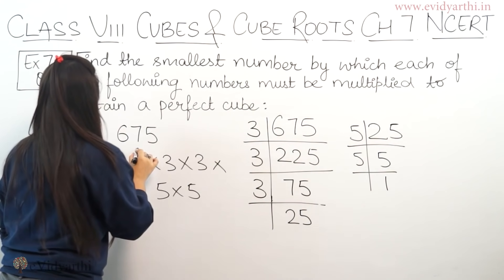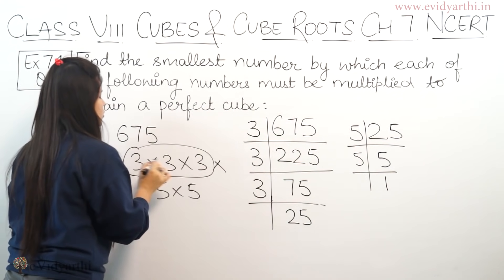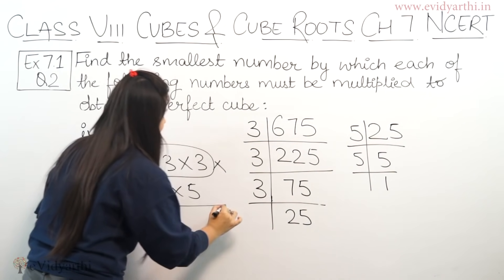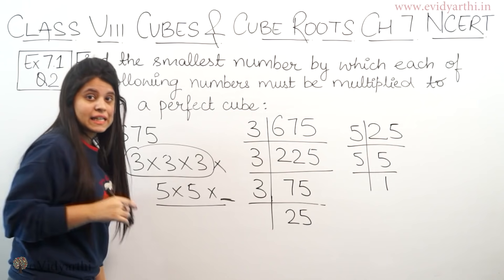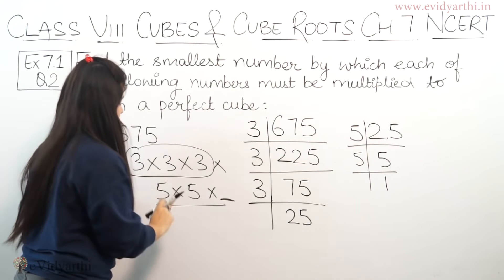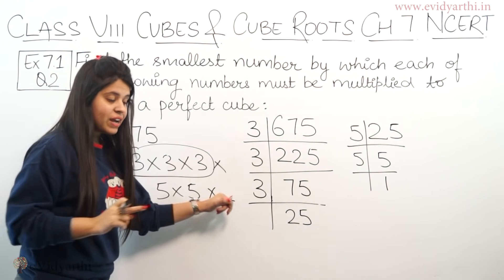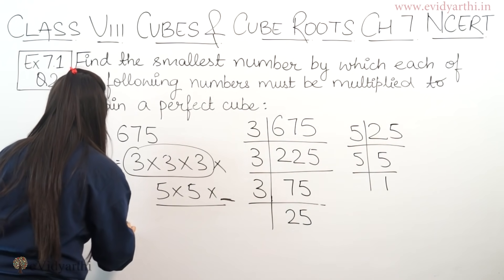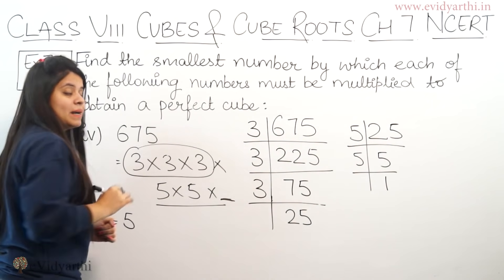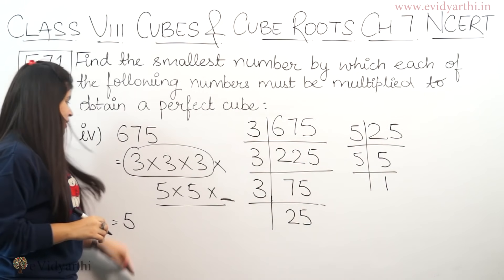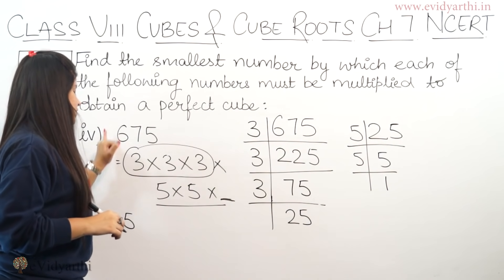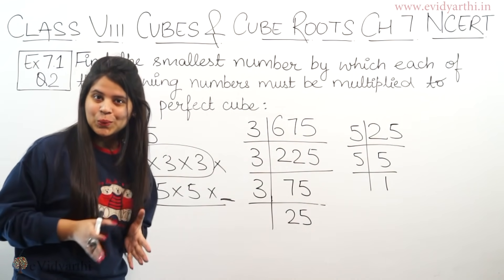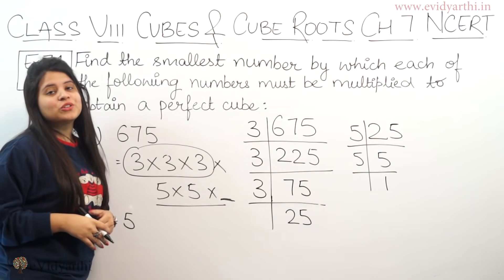Now let's see: we have a triplet of 3s — that is 3 × 3 × 3. But one number is missing here, which is 5. Because if there were one more 5, a triplet of 5s would be formed. So the number that should be multiplied is 5. If we multiply 675 by 5, the resulting number will be a perfect cube. This was part number 4.